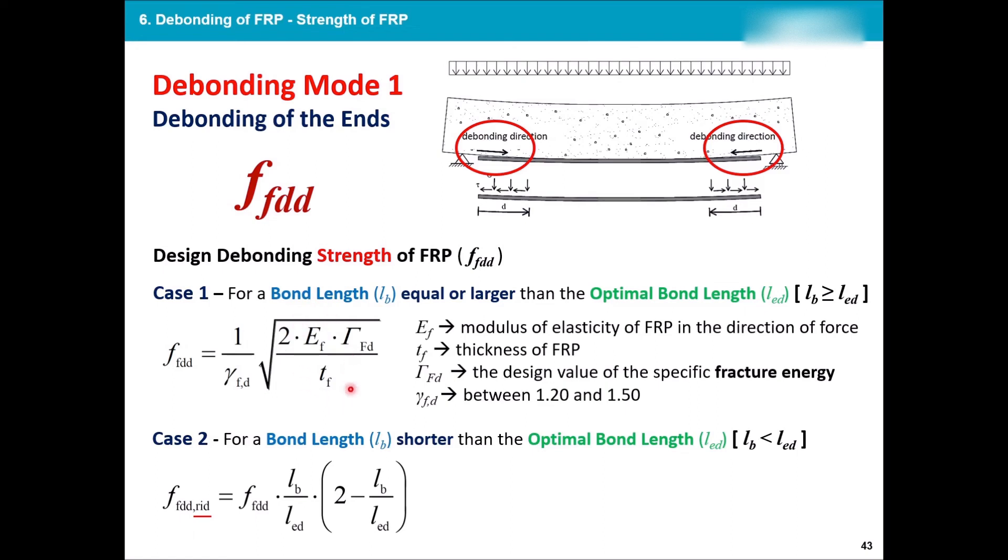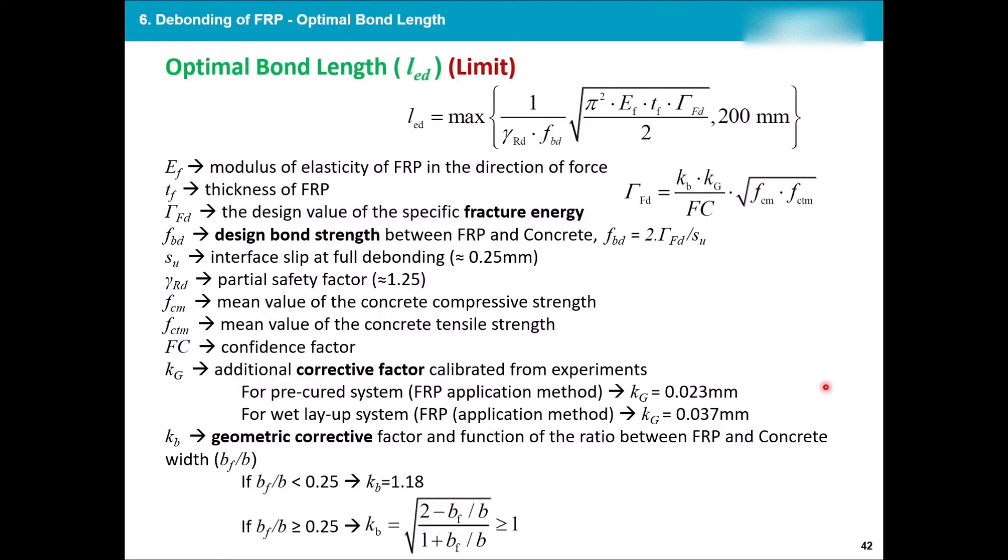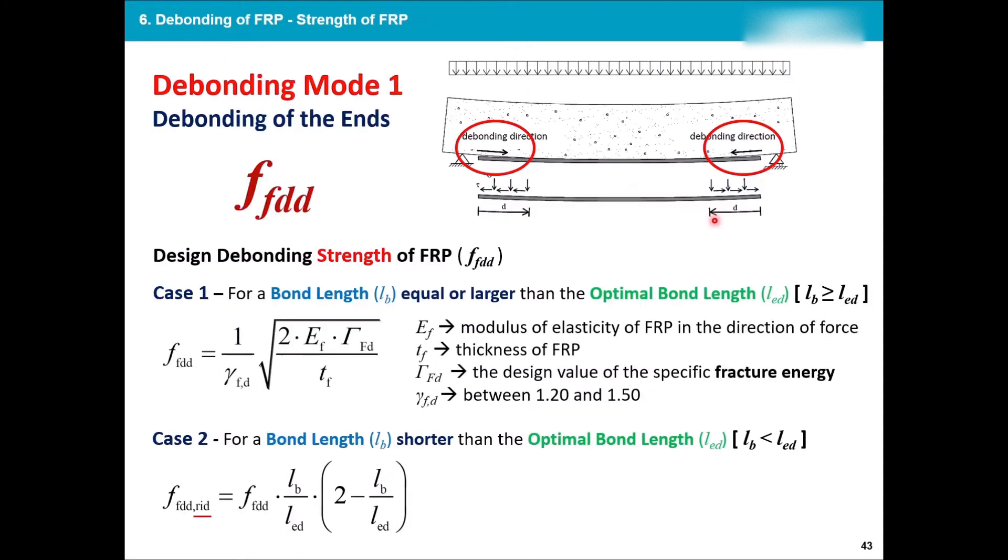Which, similar to the length, it depends on some properties of the FRP, as well as the fracture energy. Which the fracture energy, if you remember over here, it depended on some correction factors and some geometric factors, as well as the mean concrete strength and mean concrete tension strength. So compressive strength of concrete and tension strength of the concrete, as well as a factor of correction or safety factor. And if it's shorter than the optimal bond length, then that debonding strength that I had will be multiplied by some other factors which will bring it a little bit lower. So remember this, f_dd is a very important factor, and this is the actual strength of my FRP. This f_dd depends on the debonding of my FRP as well, so that debonding method will indicate whether my strength is high or low.